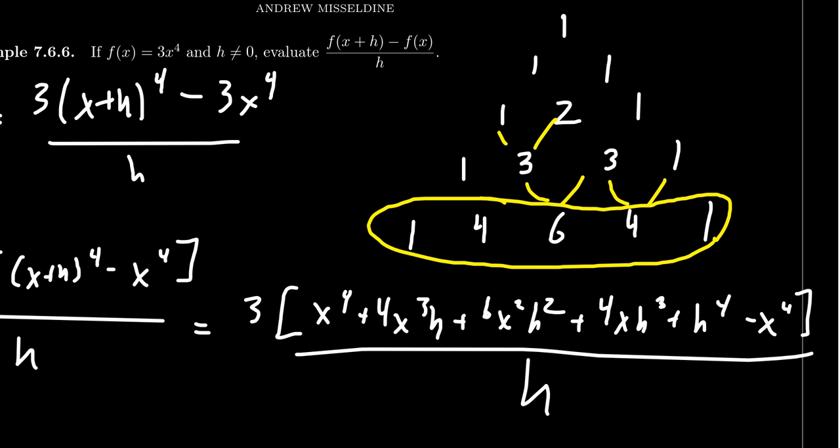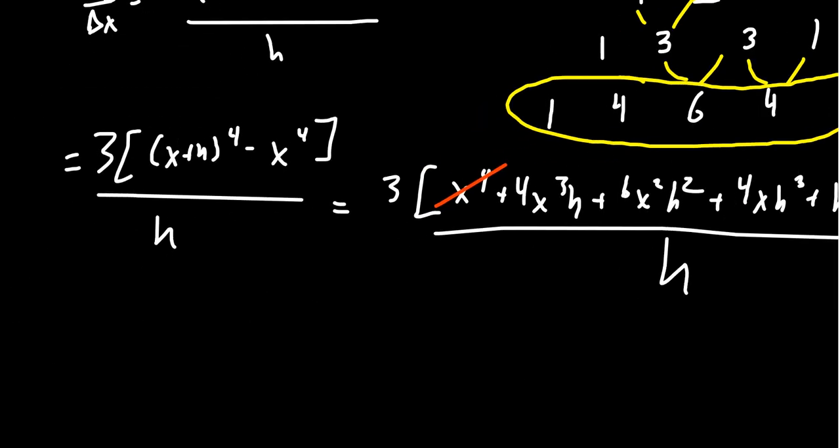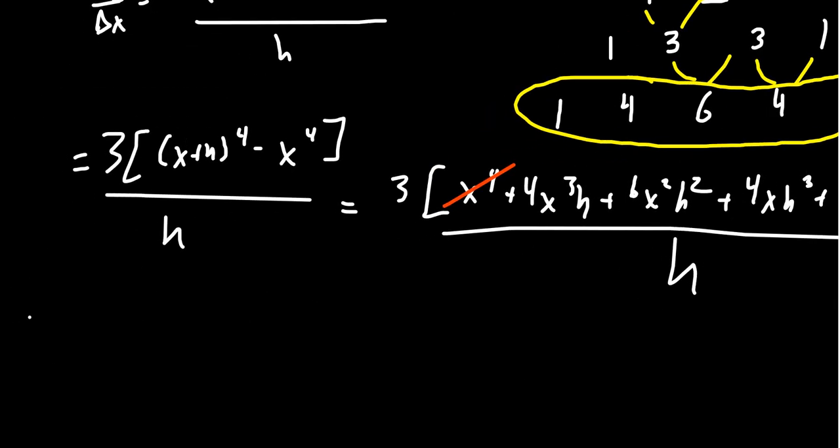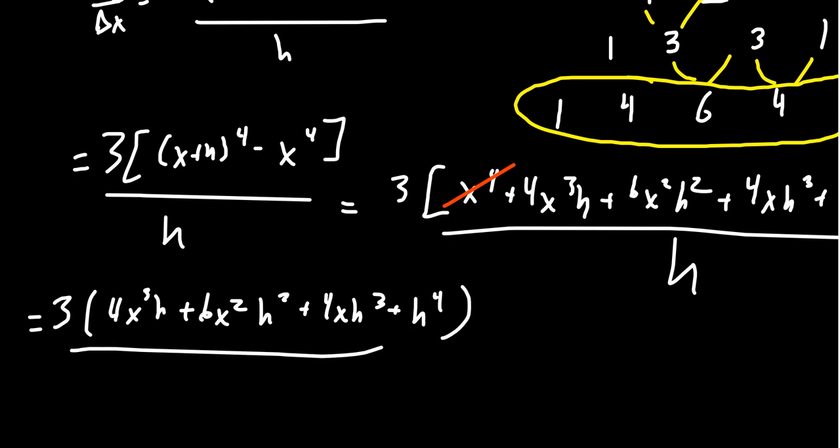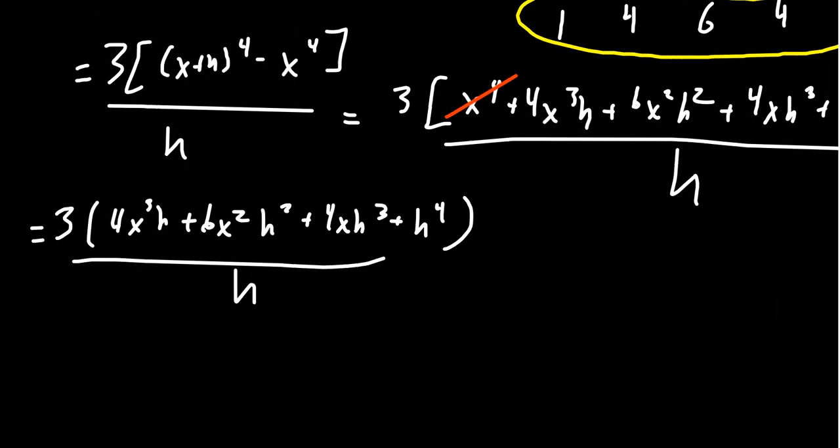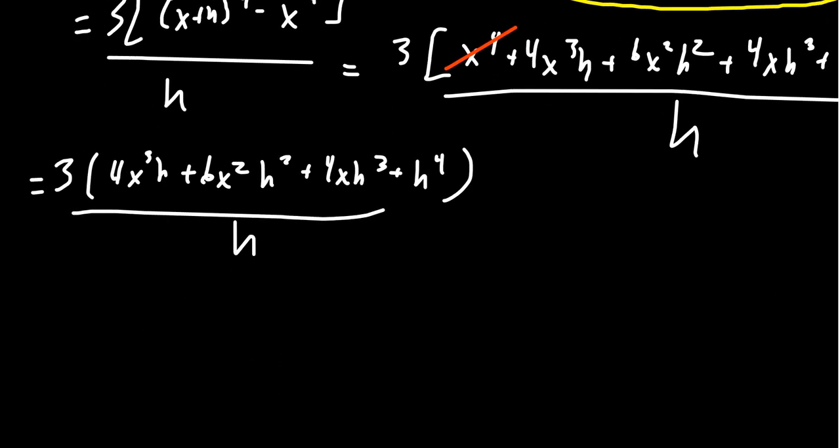So cancel out the terms that you can. You have an x⁴, which cancels with the x⁴. So then what is left behind? You're going to get 3 times 4x³h plus 6x²h² plus 4xh³ plus h⁴. This all sits above h. Notice that everyone in the numerator is now divisible by h. You can factor it out.